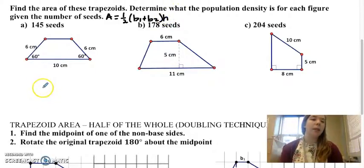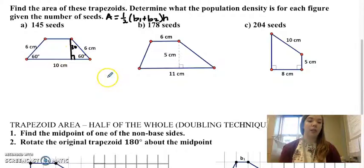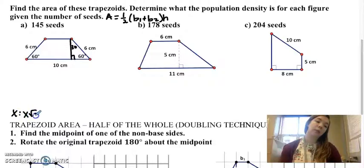All right, so what I need here is I need this base and this height. So I'm missing two pieces of information, but we're using what we know about special right triangles here to fill in the missing information. So remember, 30, 60, 90 is x, x root 3, and 2x is your ratio. So my hypotenuse here is 6, that makes my shortest leg 3, and this one 3 root 3.